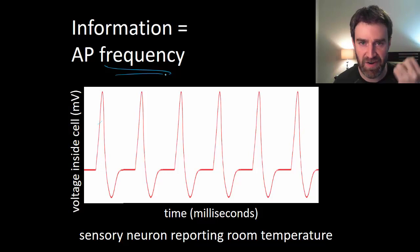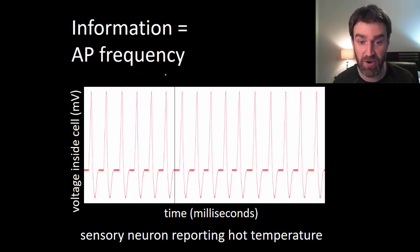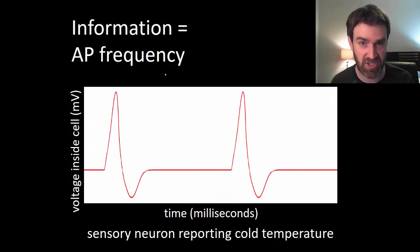So maybe at room temperature it fires this fast, but maybe if I put my hand on a hot stove it would fire much quicker to send that information—hey, now it's hot. And then maybe if it's really cold it would fire much slower, and that would be the information about it being cold. And so all neurons fire action potentials the same way, and they can give information about the intensity of that stimulus with how often they fire.